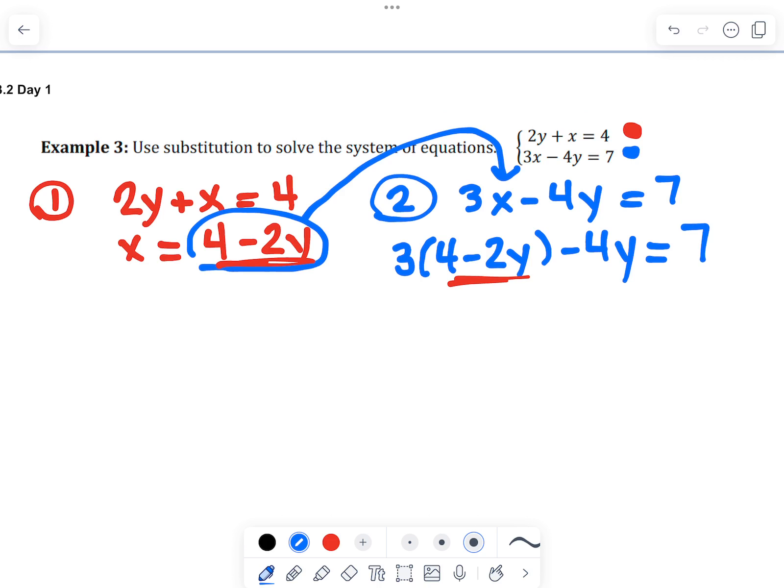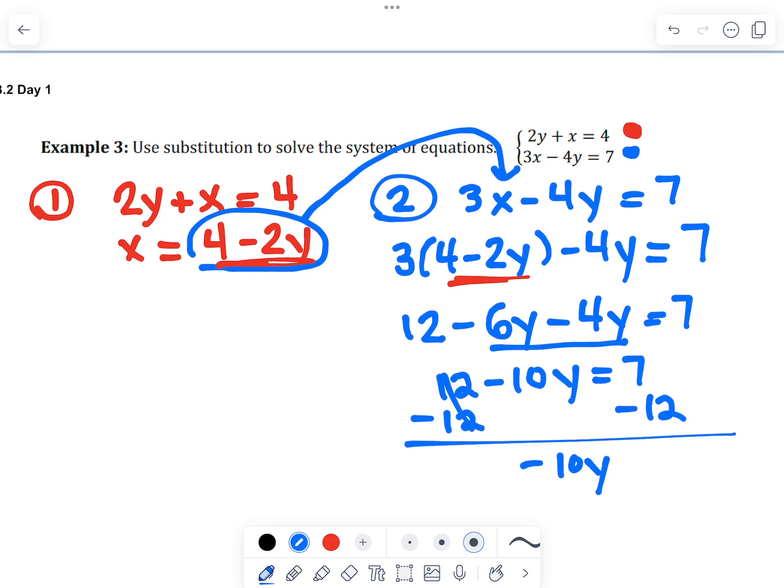And now we're going to solve for y. So we distribute the 3 into the parenthesis. And we're going to solve for y. Combine like terms. Subtract 12 from both sides. Simplify. Divide both sides by negative 10. And y is reduced to 1 half. So there's step 2.